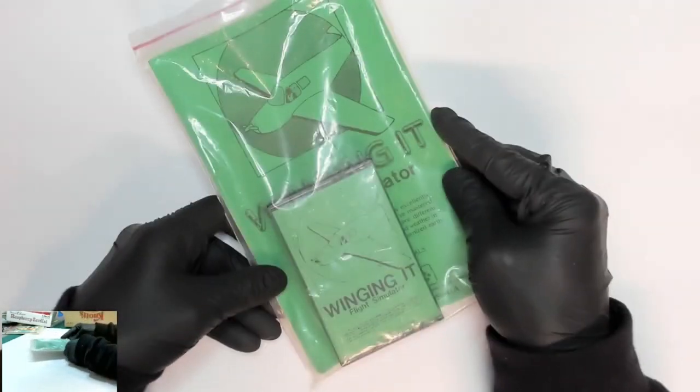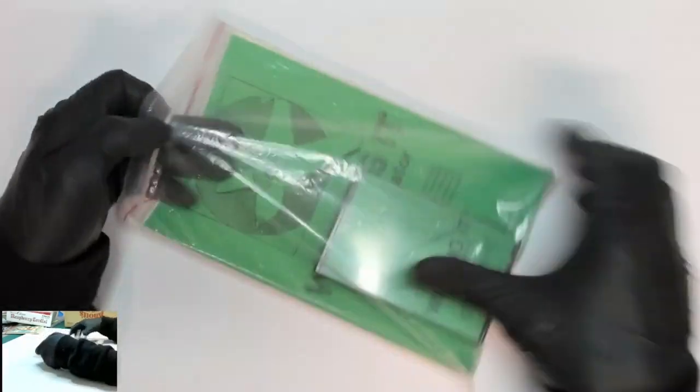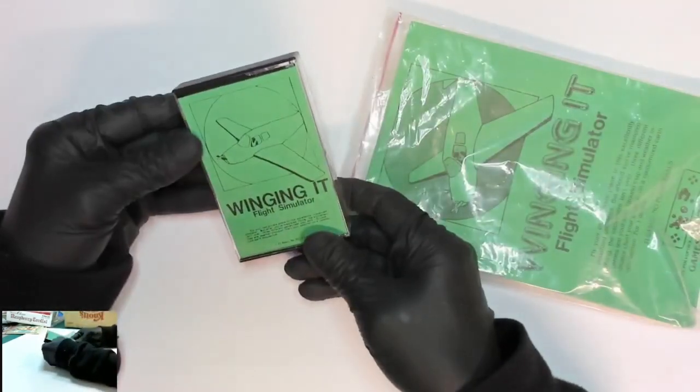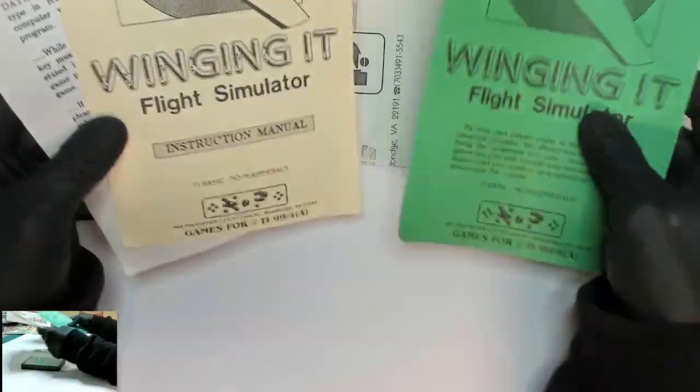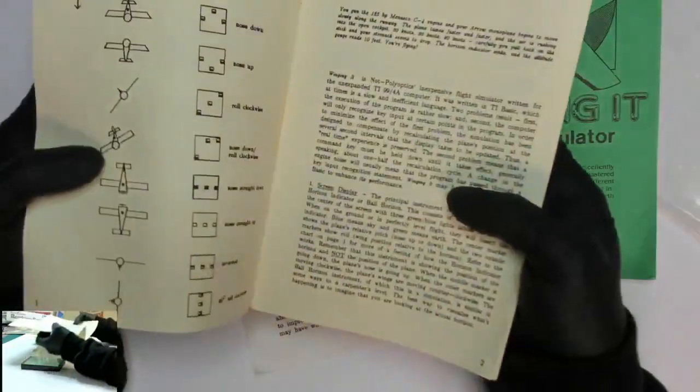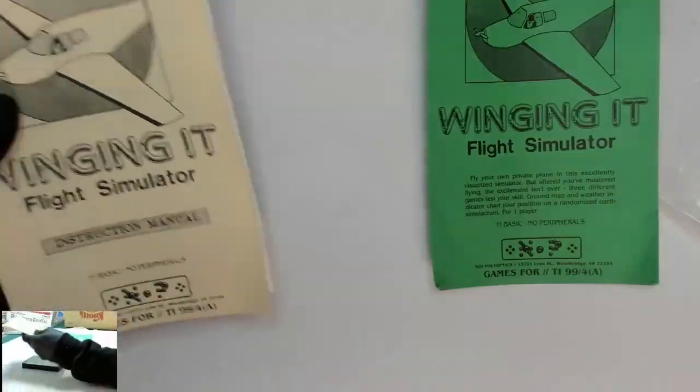And then we'll get on to the next item here. Looks like another program. In this case, it's a flight simulator. We're winging it. Pretty cool. I bet this paperwork hasn't been out of that bag since 1980. It's got a little manual with it. Check out these graphics. Good stuff. So, another program. We'll set this back in its bag here in just a bit.